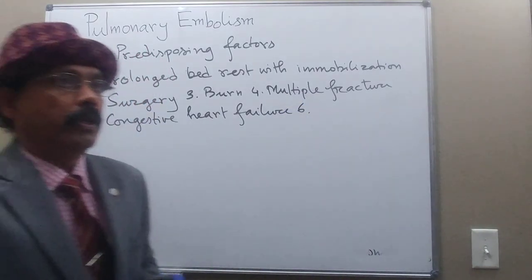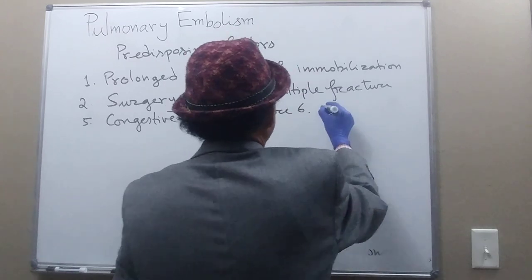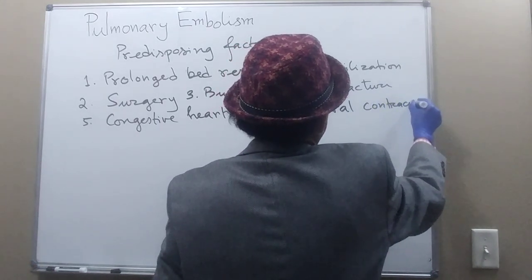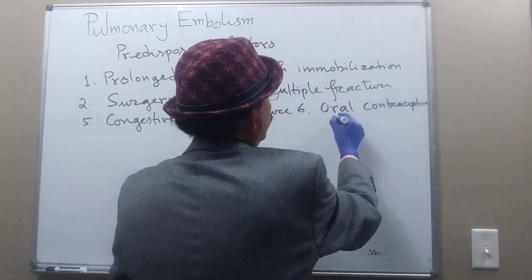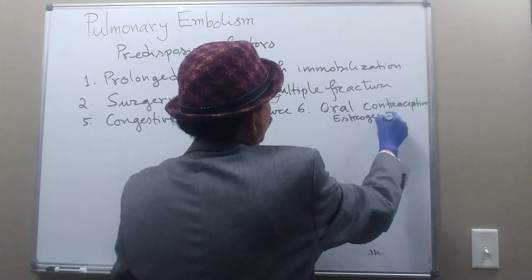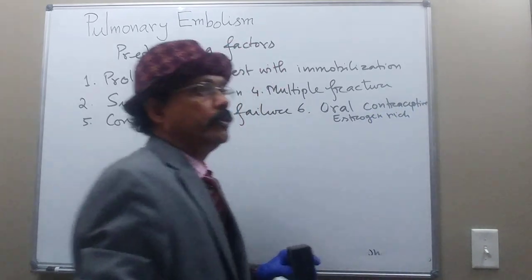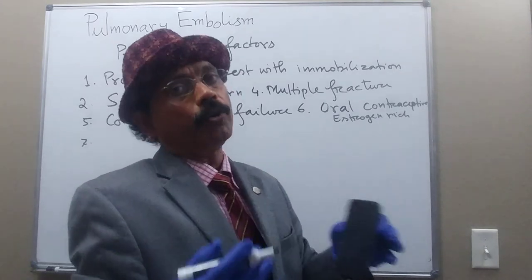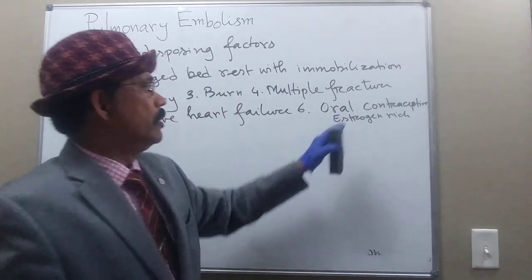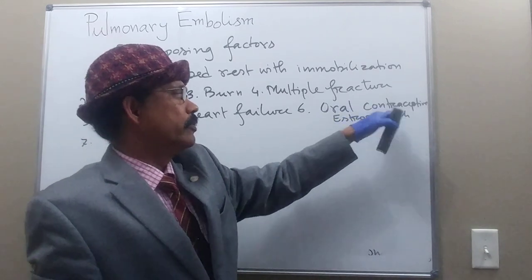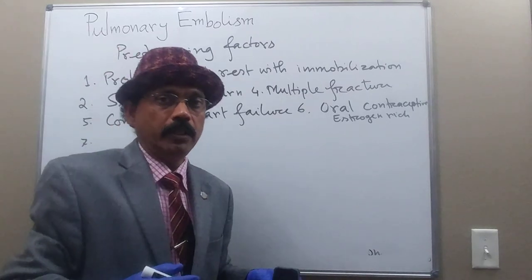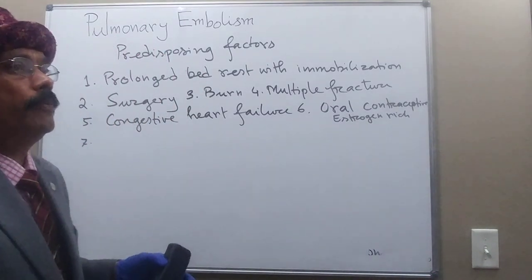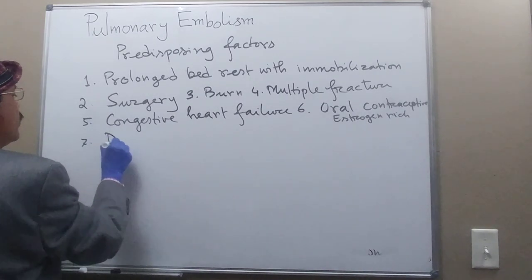Then we have the use of oral contraceptives by females — those rich in estrogen. Women over the age of 30–35 who are smoking have a greater chance of getting pulmonary embolism when combined with oral contraceptives. If they smoke or are above the age of 30–35, there is more chance of getting pulmonary embolism.